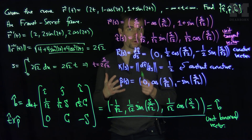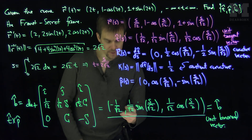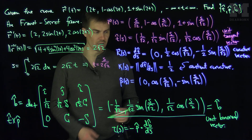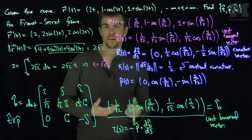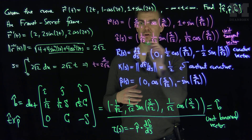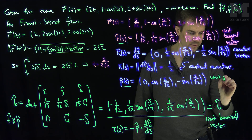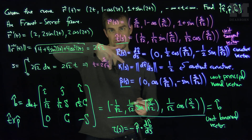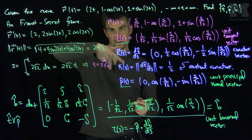If we wanted to find the torsion, we would compute −P-hat · (dB/ds). We now have all the components needed to do that derivative and dot product to find the torsion of the curve. This completes the Frenet-Serret frame: T-hat is the unit tangent vector, P-hat is the unit principal normal vector, and B-hat is the unit binormal vector. T, P, and B act like î, ĵ, k̂, except they move along the curve while maintaining their mutual orientation. Thank you very much.